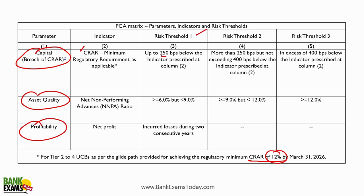If CRAR is more than 250 basis points below the minimum but less than 400 basis points, it would be under Risk Threshold 2. And in excess of 400 basis points below the minimum, it would be under Risk Threshold 3.